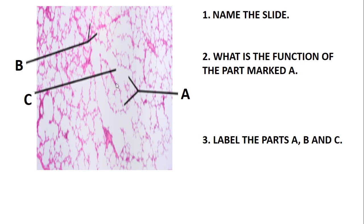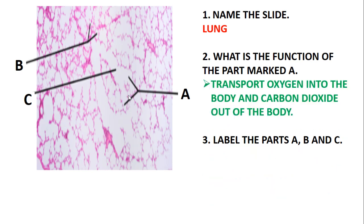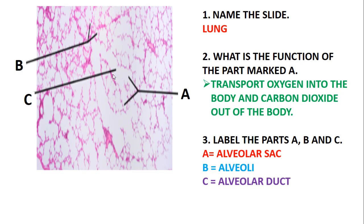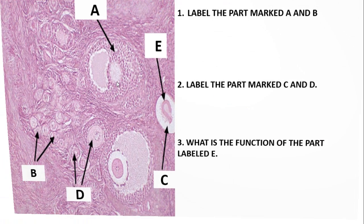The next slide — name the slide. You can see the alveolar duct and the alveolar sac, so this is the lung. The function of the part marked A, which is the alveolar sac, is to transport oxygen into the body and carbon dioxide out of the body. Label parts A, B, and C: A is the alveolar sac, B is the alveolus, and C is the alveolar sac.